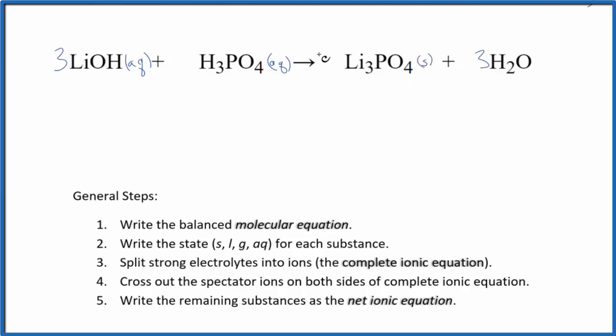It also means that when this happens, this will be a precipitate. This will fall to the bottom of the test tube as a solid. Water, that is a liquid. So now we have our states. We can split the strong electrolytes into their ions. That'll give us the complete ionic equation.